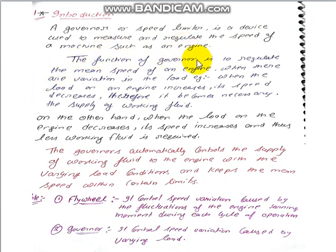The function of the governor is to regulate the mean speed of an engine. When there are variations in the load — meaning the load on the engine changes — the speed also varies. The governor responds to that speed variation.